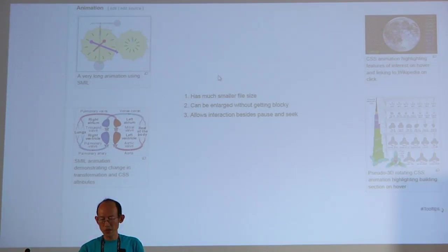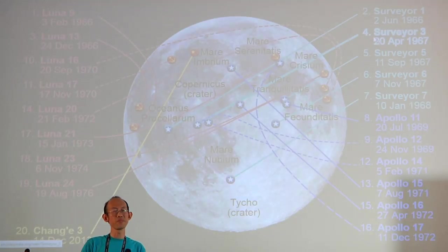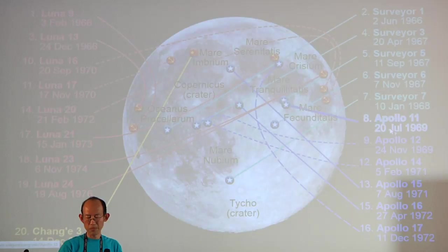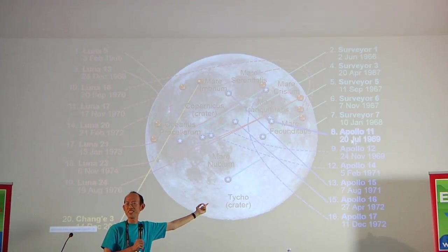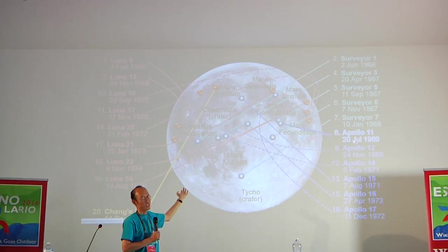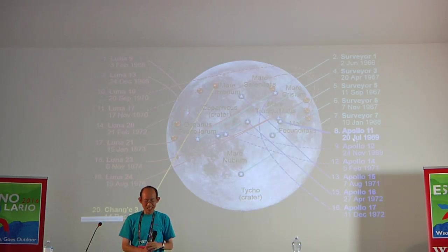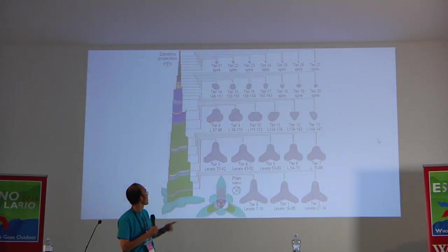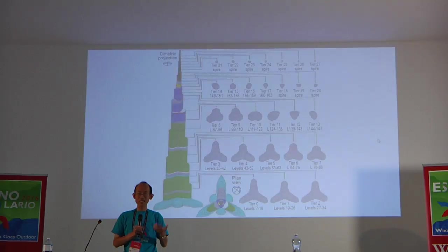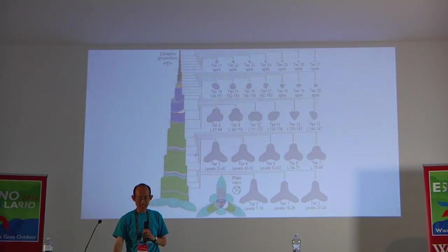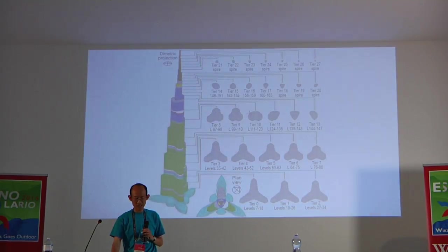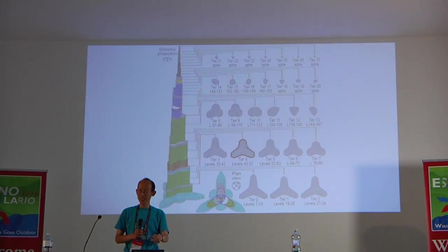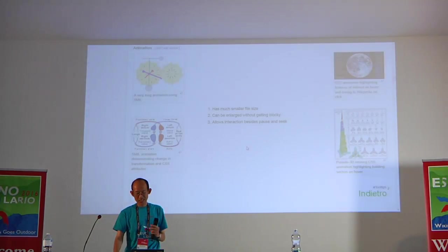SVG also allows interactivity beyond just pausing. For example, this animation shows a moon with all the soft landings made so far — if I hover over Apollo 11, you can see a little flashing indicator. You can also fake 3D rotating objects, like this Burj Khalifa. I can highlight part of the tower to see cross-sections and where different parts lie. All these are on their respective Wikipedia articles.